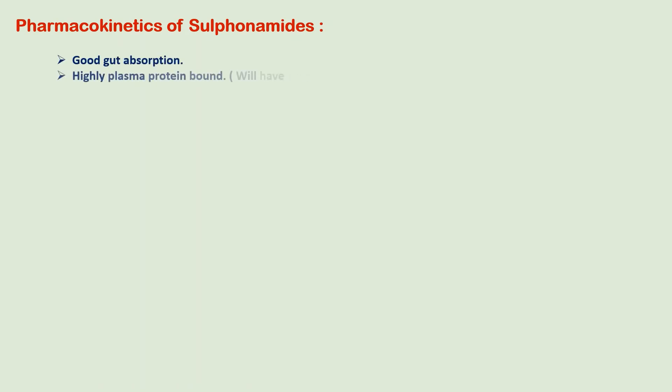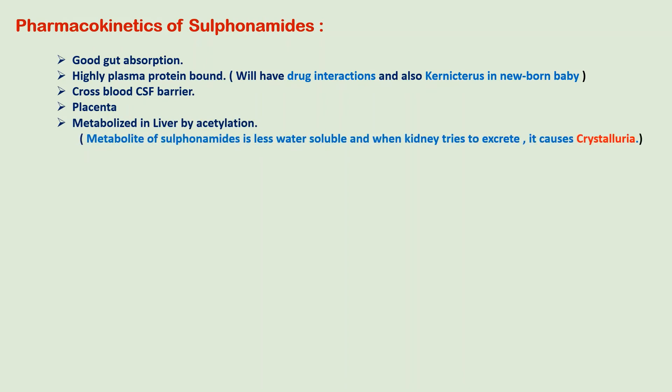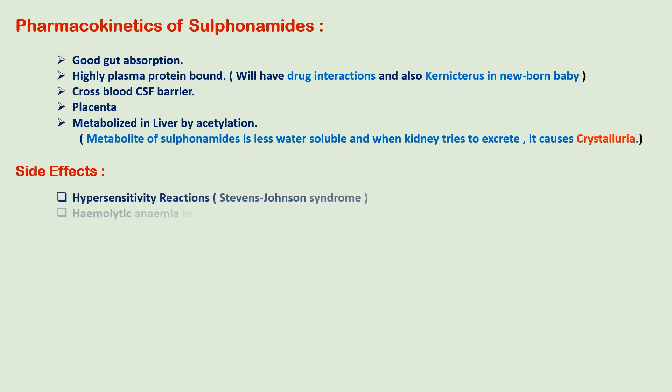Regarding pharmacokinetics, sulfonamides have good gut absorption and are highly plasma protein bound, which accounts for certain drug interactions and risks that will be discussed under adverse drug reactions. They cross the blood-CSF barrier and also the placenta. They are metabolized in the liver by acetylation via non-microsomal acetyltransferases, and the metabolites are less water soluble than the parent drug, so they may precipitate and cause crystalluria. Cotrimoxazole is given IV, reaches high concentrations in sputum, and is renally excreted.